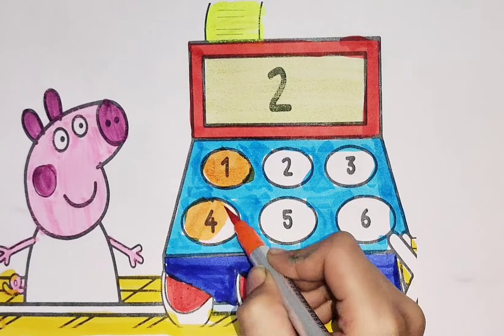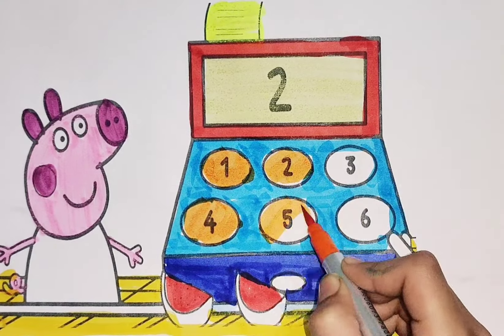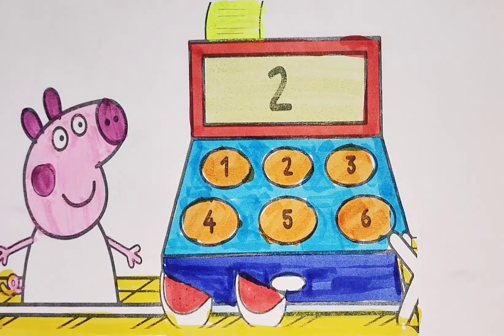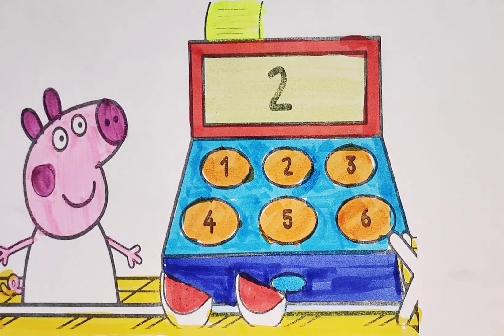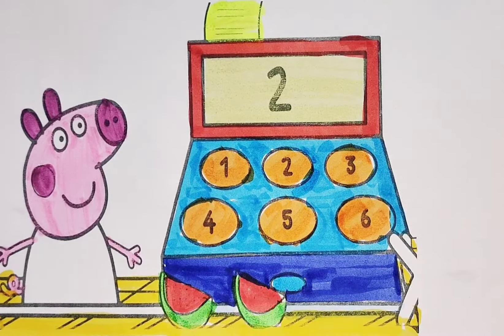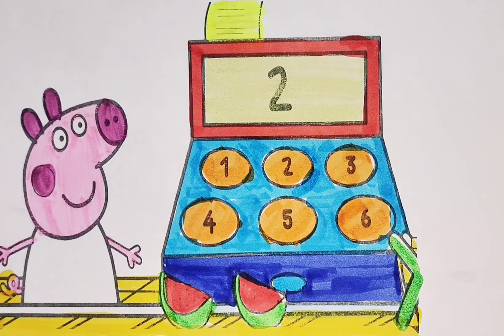And if that dog named Grover won't bark, Mama's gonna buy you a horse and cart. And if that horse and cart fall down, you'll still be the sweetest little baby in town.